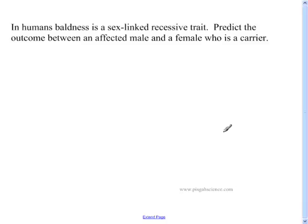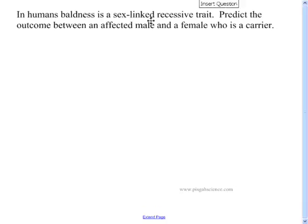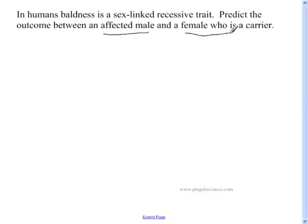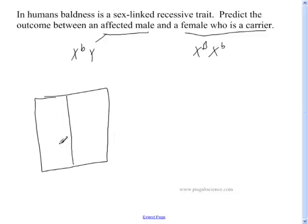So let's work a problem. In humans, baldness is a sex-linked recessive trait. Predict the outcome between an affected male and a female who's a carrier. How would we write an affected male? Since it's a male, it's going to be XY. Since the male is affected, we're going to use a lowercase b there. A female who's a carrier is going to be XX. She's a carrier, so she's going to be heterozygous.